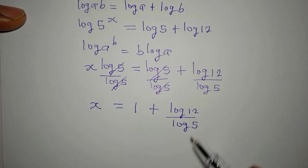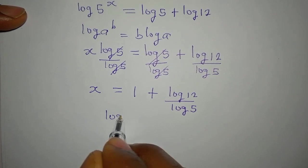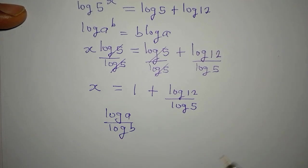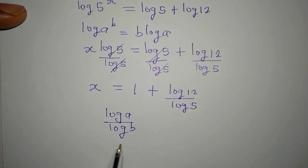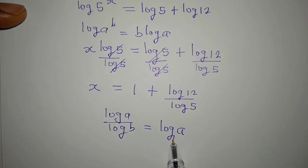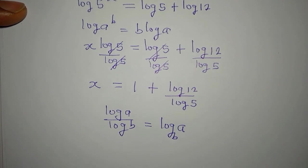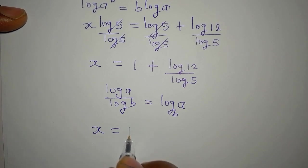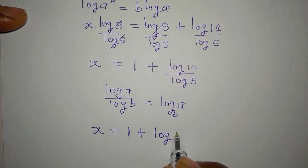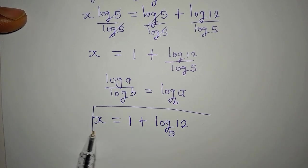From here we can apply change of base. If you have log a over log b, and no base is indicated, they are all in base 10 — so this is log a to base 10 over log b to base 10. If you want to change the base, this becomes log a to base b, where b becomes the new base. Applying the same thing here, we get x equal to 1 plus log 12 to base 5.